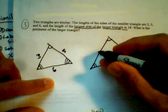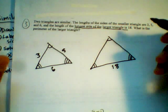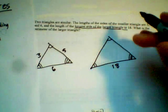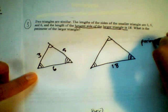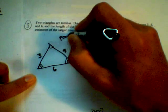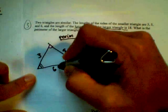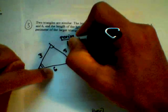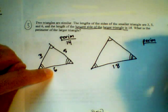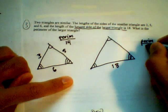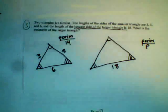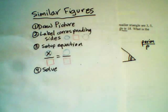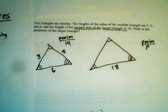Now we've got to figure out the perimeter of the larger triangle. We know the sides of the smaller triangle are 3, 5, and 6, so its perimeter is 3 plus 5 is 8, plus 6 is 14. We'll write 'perim' on the side for each triangle just to remind ourselves. The perimeter of the larger triangle we'll call P. Now let's measure off our corresponding sides. Please use the shapes on your paper — don't just leave it to chance.